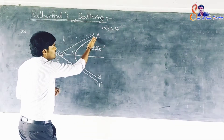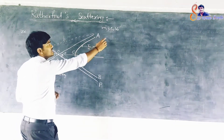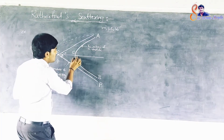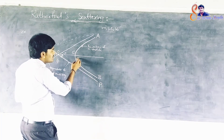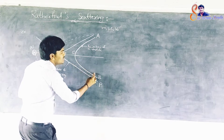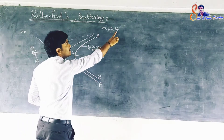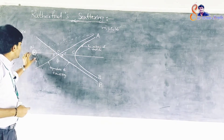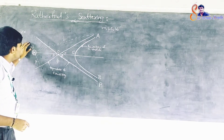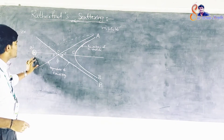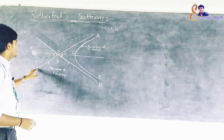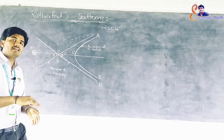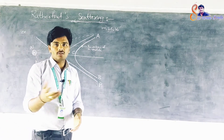In the part of journey AC, the velocity V₀ goes on decreasing. But in the part of journey CB, the velocity again goes on increasing till the original velocity V₀ is reached. Here, P is the perpendicular distance from the nucleus N to the original direction of the alpha particle. This distance is called the impact parameter, also known as the collision parameter.